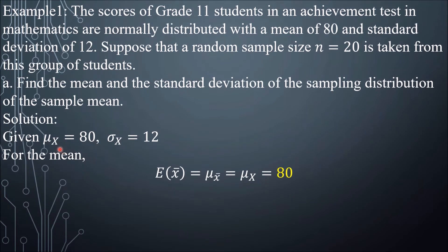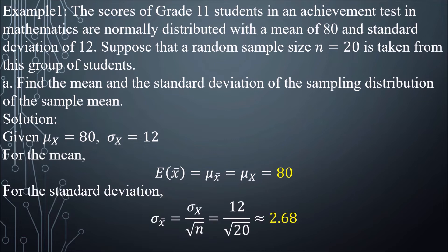For the solution, we have population mean equal to 80 and population standard deviation equal to 12. Since the population is normally distributed, the sample mean is the same as the population mean, which is equal to 80. For the standard deviation of the sample, we have sample standard deviation equal to the population standard deviation divided by the square root of n, which is 12 over the square root of 20, approximately 2.68.